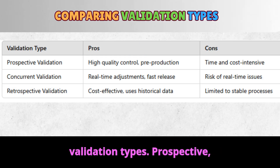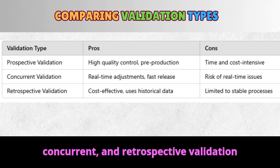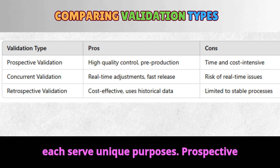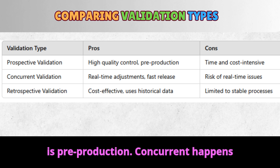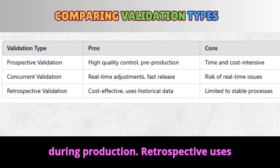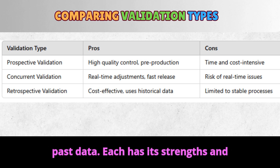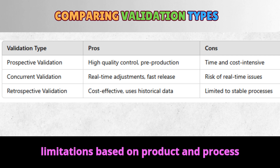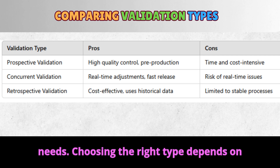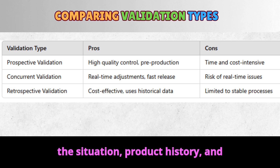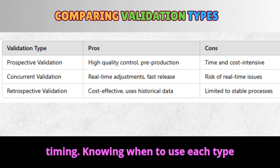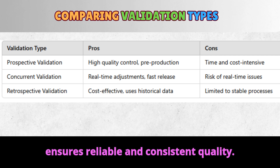Comparing validation types. Prospective, concurrent, and retrospective validation each serve unique purposes. Prospective is pre-production; concurrent happens during production; retrospective uses past data. Each has its strengths and limitations based on product and process needs. Choosing the right type depends on the situation, product history, and timing. Knowing when to use each type ensures reliable and consistent quality.